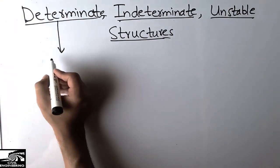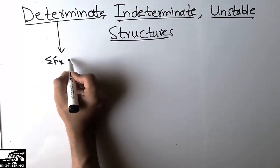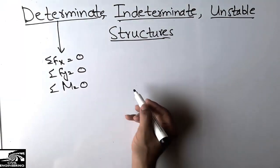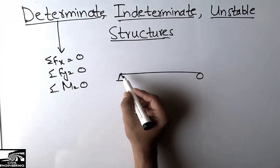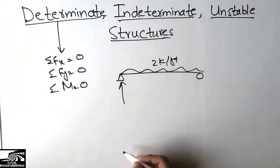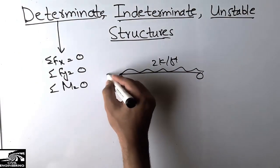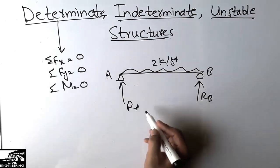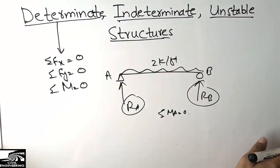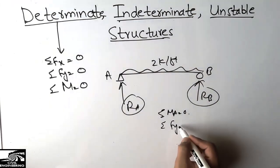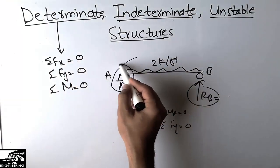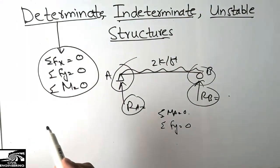We can know the type of structure if it can be analyzed by the three equilibrium equations: summation of Fx = 0, summation of Fy = 0, and summation of moments = 0. For example, considering this beam with a 2 kips per foot load acting on it, we can find the reactions RA and RB by taking summation of moments at A = 0 and summation of Fy = 0. This type of structure is called a determinate structure.